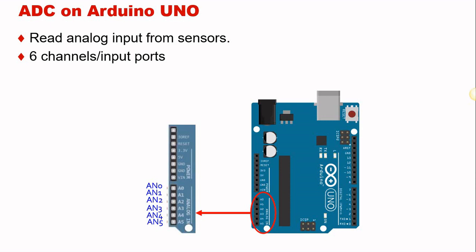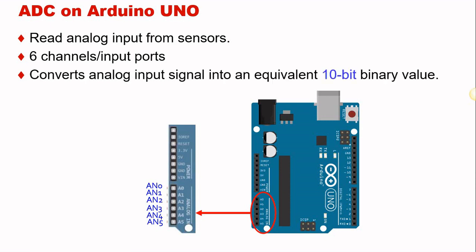You can choose from A0 until A5, meaning that at the same time you can only have six analog sensors that can be connected to your board at certain time.